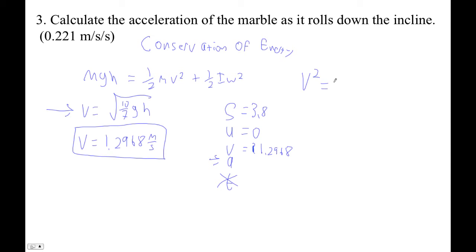v squared is u squared plus 2as, so 1.2968 squared is 0 squared plus 2 times a times 3.8. So let's just plug this in.